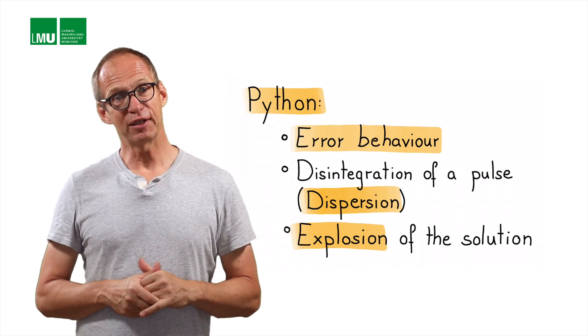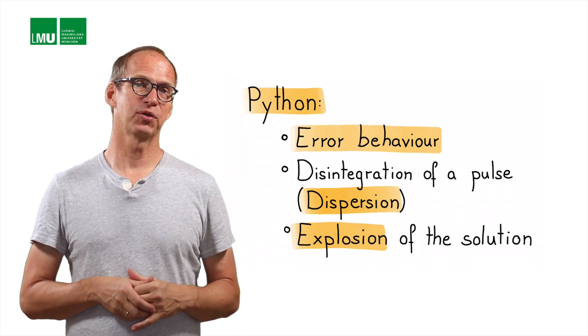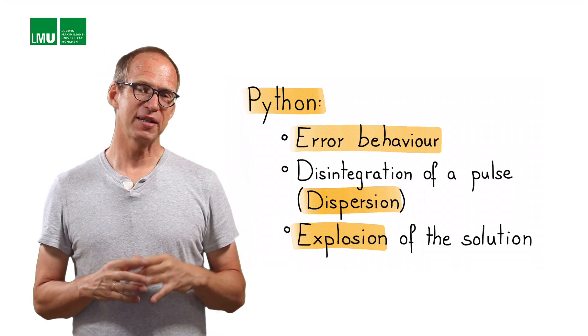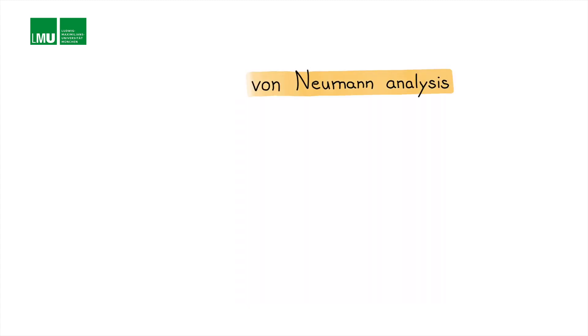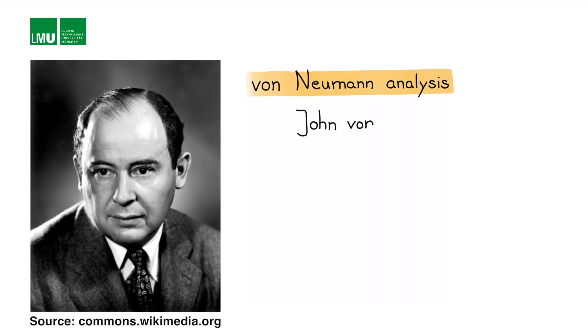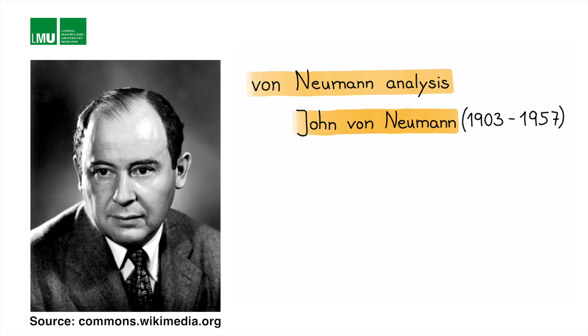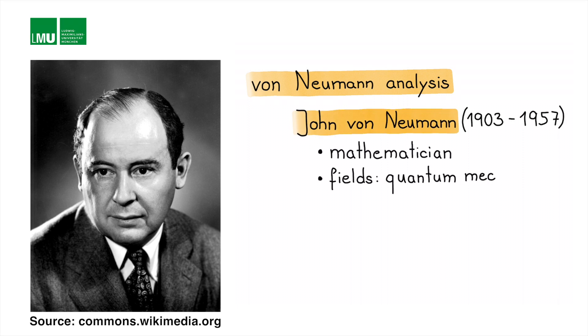The nice thing about the finite difference method is it's actually possible to predict these things mathematically, and that's based on the so-called von Neumann analysis. John von Neumann was a brilliant physicist, mathematician, one of the founding fathers of quantum mechanics, game theory, and also scientific computation and computer theory.